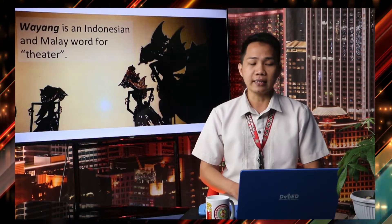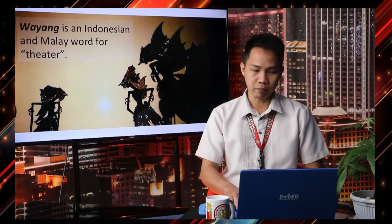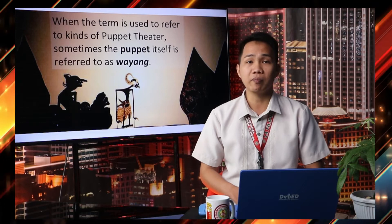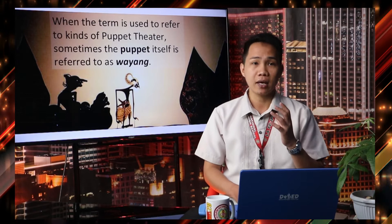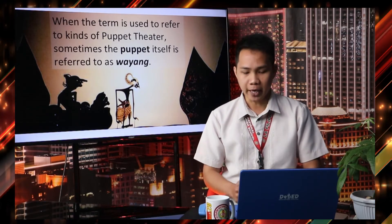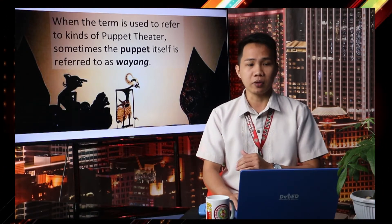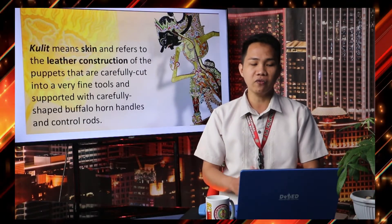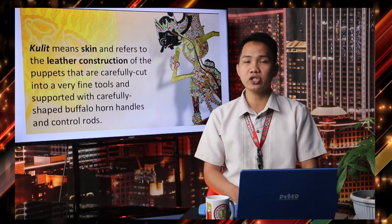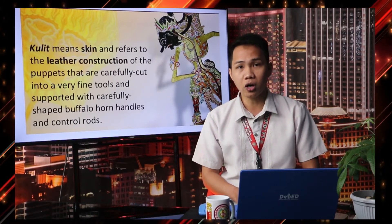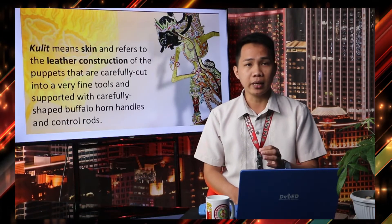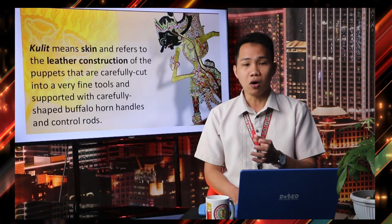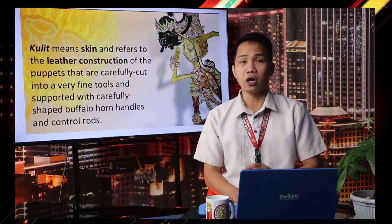What do we mean by Wayang Kulit? The word Wayang is an Indonesian and Malay word for theater. When the term is used to refer to kinds of puppet, sometimes the puppet itself is referred to as Wayang — in other words, Wayang means puppet. The word Kulit means skin and refers to the leather construction of the puppets that are carefully cut using fine tools and supported with carefully shaped buffalo horns, handles, and control rods. So Wayang is puppet, Kulit is skin — the leather material of the puppet.